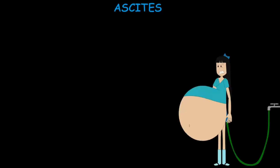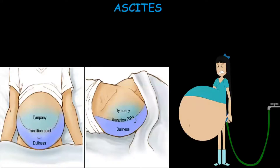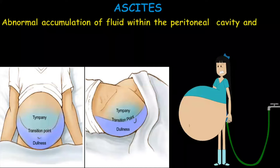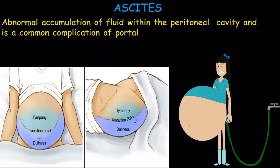Hello everyone. Today we will talk about ascites. So what is the definition of ascites? Ascites is the abnormal accumulation of fluid within the peritoneal cavity, and it's a common complication of portal hypertension and hypoalbuminemia.